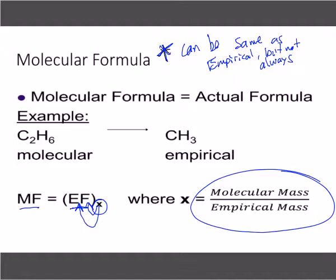They might be the same. They might be different. Empirical is the simplest ratio. Molecular could be that, or it could be a multiple of it. So we're trying to figure out, how does the molecular mass relate to the empirical mass? They will give you the molecular mass in a problem. You may have to figure out the empirical mass to get this ratio, but you will always be given that molecular mass.